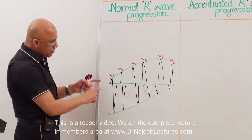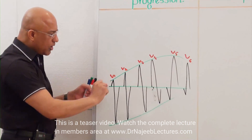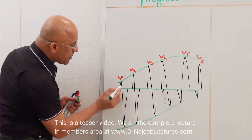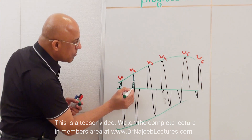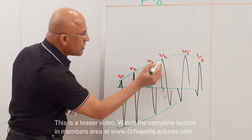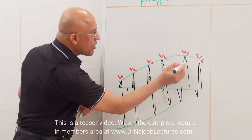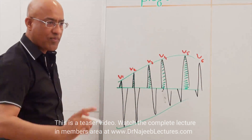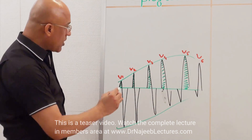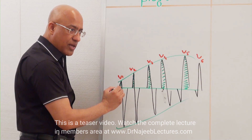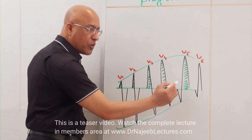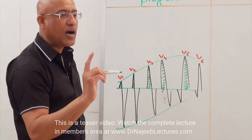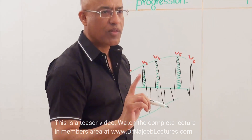But if you focus only on R-waves, on R-wave deflections, you will note that as you move from V1 up to V5, R-waves are becoming progressively tall. As you move from V1 up to V4 or V5, the height of the R-wave is progressively increasing. This phenomenon where R-wave from V1 up to V4 or V5 progressively increases in height is called R-wave progression in chest leads or precordial leads.